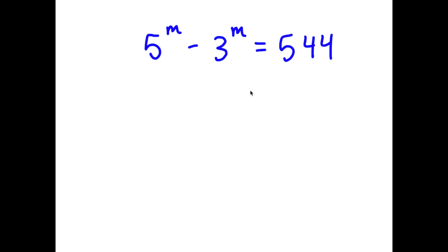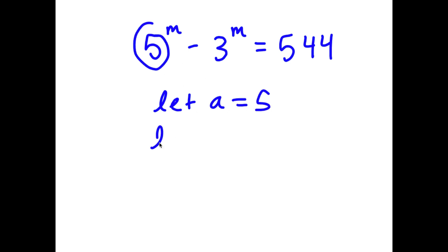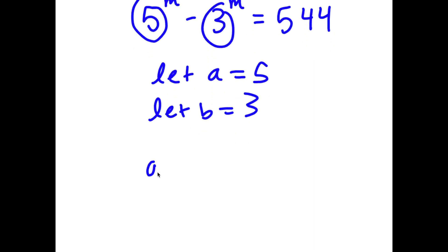In this problem, I have 5 to the power of m minus 3 to the power of m is equal to 544. I'm first going to let a equal 5 and let b equal 3. So now I have a to the power of m minus b to the power of m is equal to 544.